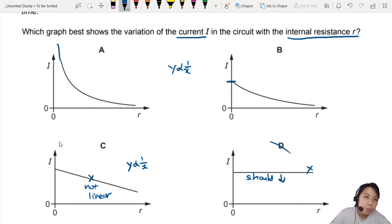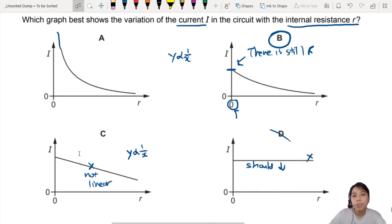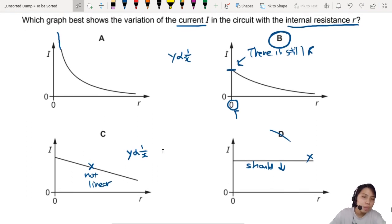Here, you are saying there's no intersection. It goes up to infinity. No. When internal resistance is 0, there should still be a current. A finite current. Because there still is R in the circuit. So you'll still have some value of I. Okay. So this one is the best answer. Best choice for a graph question like this.